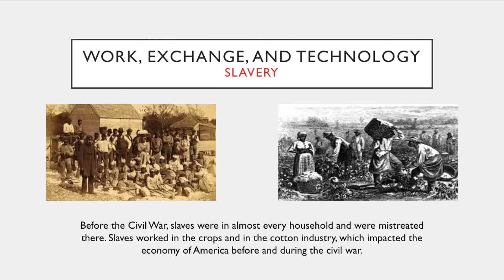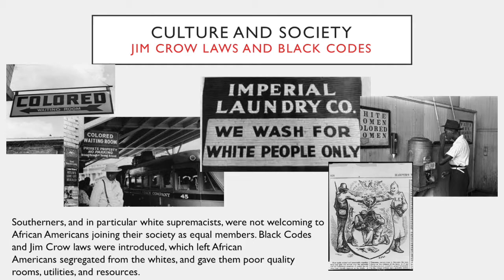Regarding culture and society: the culture of America became much more tense during the Reconstruction. African Americans began their lives as free, regular citizens, but Southerners — and in particular white supremacists — were not welcoming to African Americans joining their society as equal members. Black codes and Jim Crow laws were introduced, which left African Americans segregated from whites and gave them poor quality rooms, utilities, and resources.